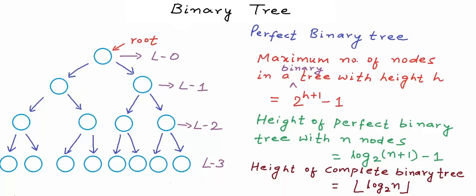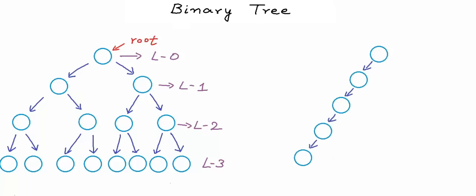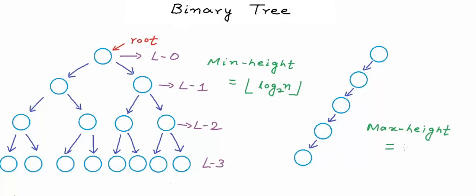All this math is helpful when analyzing the cost of various operations on binary trees, since the time cost depends on height. For example, in a binary search tree, the cost of searching, inserting, or removing an element is proportional to the height. With n nodes, the minimum height possible is the floor of log n to the base 2, achieved by a complete binary tree, and the maximum height is n-1, achieved by a sparse tree that is essentially a linked list.